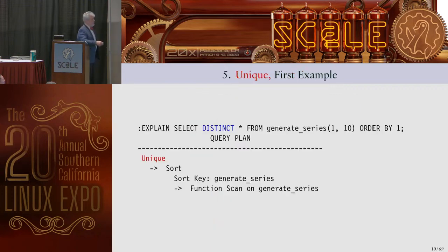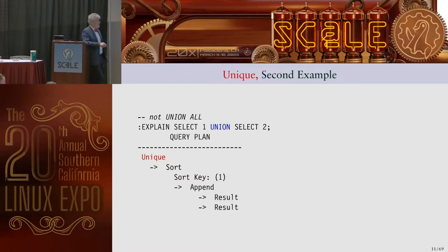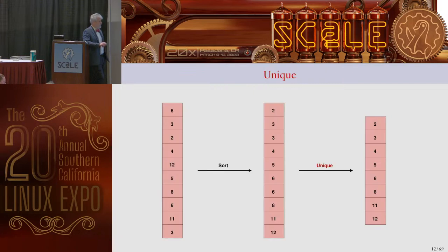Unique: the best way to see this is using DISTINCT in the target list — give me distinct values from numbers 1 to 10 and you get a unique node. Another way is UNION without the ALL keyword, which gives unique results. The way it works: we take the values, sort them so duplicates are adjacent, then remove the duplicates in the last stage.